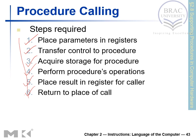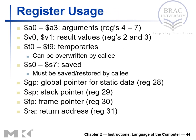In MIPS register use, this slide gives the detail of the available registers, their names and their purposes. The first ones are a0 to a3, which are argument registers used to pass arguments to functions. Then v0 and v1 are used for return values. Then we have temporary registers t0 to t9, save registers s0 to s7, global pointer which points to global variables in memory, and stack pointer which points to the stack in memory. Frame pointer points to the starting point of frames, and ra is the return address register.